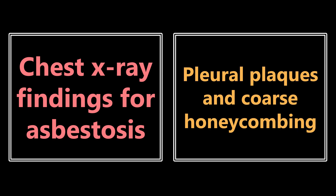Next, the chest X-ray findings for asbestosis. These are things we don't commonly see in the emergency department, but we need to know them for the exam. Asbestosis is going to be pleural plaques and coarse honeycombing. If they describe pleural plaques and coarse honeycombing on the exam, you definitely want to be thinking about asbestosis.